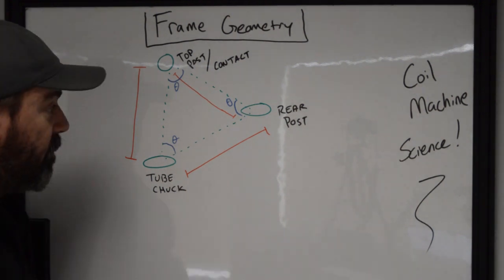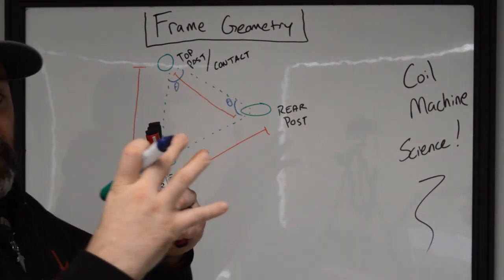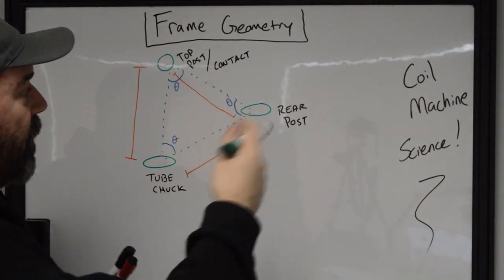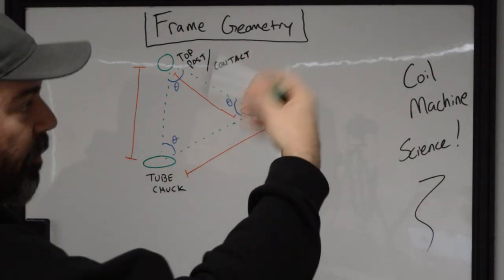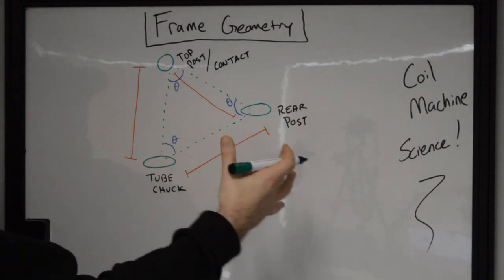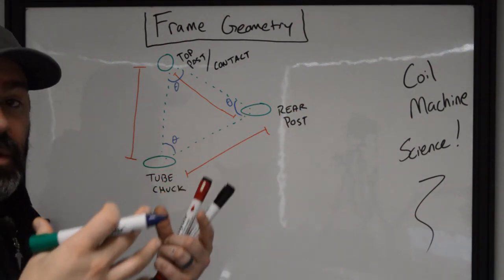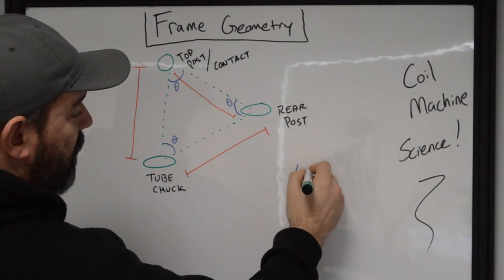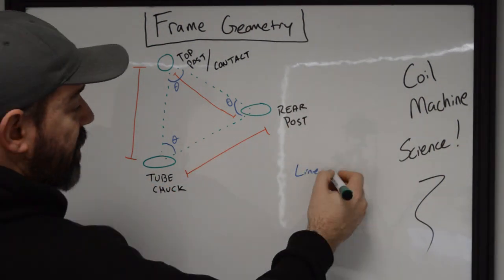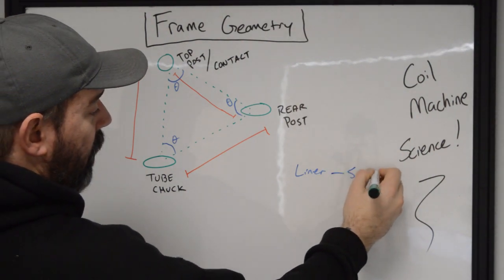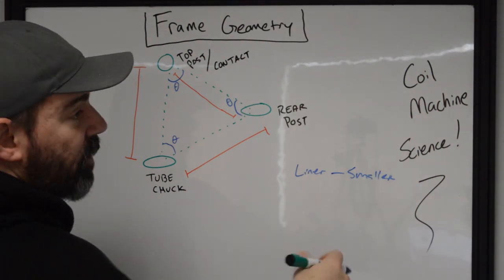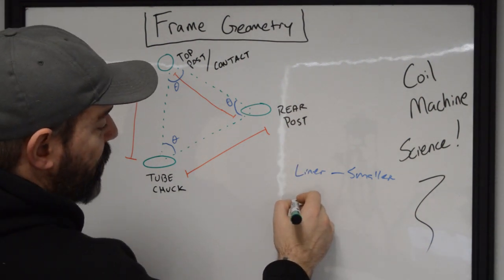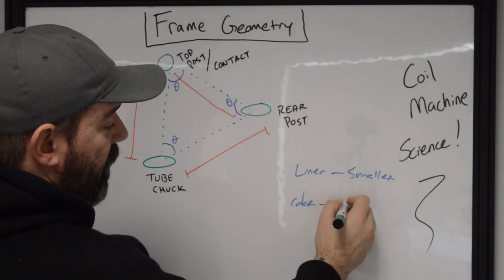So what do I mean by that? Well, the tighter anything is together, the less it's going to have to move to try and accomplish whatever this goal is. And with this, it's going to be moving the A-bar up and down. So the smaller the profile that we have with something, usually the faster it's going to run. That's why usually we'll see liner machines that we want to be running really quickly are going to have a smaller profile.